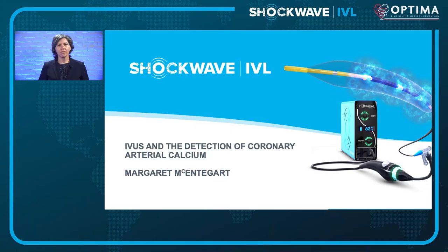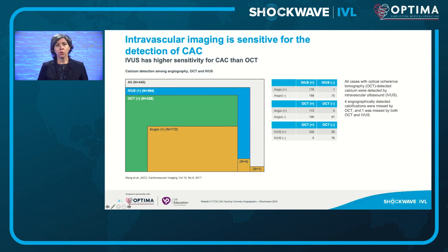We're back in the studio, and the next talk is from Margaret McIntyre, who's going to talk to us about the use of IVUS in the detection of coronary calcification. Intravascular imaging is sensitive for the detection of coronary artery calcium. We know from Anja that coronary angiography is insensitive, detecting calcium in only approximately 40% of lesions where we know it to be present. OCT is more sensitive, detecting it in approximately 77%, and IVUS is the most sensitive intravascular technique, detecting calcium in 83% of lesions.